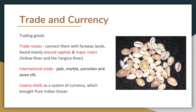They had international trade between other countries. They traded jade, marble, potions, and wolf silk. They used cowrie shells as a system of currency, which were brought from the Indian Ocean.